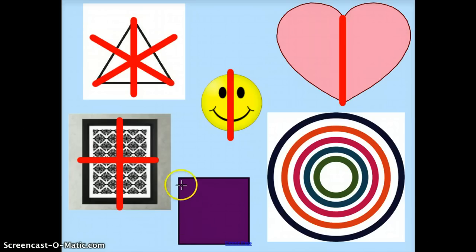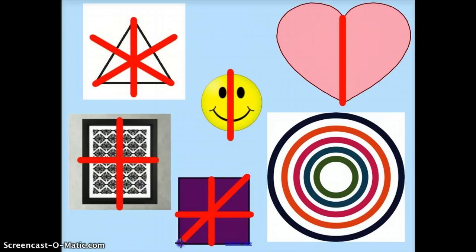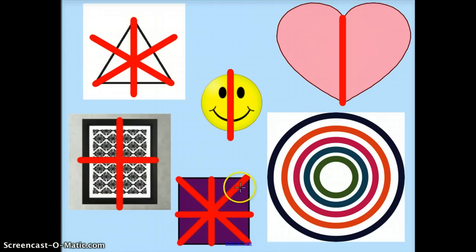Now the square is different than the rectangle. I see a vertical line, a horizontal line, but what if I go diagonal on a square? Is that a line of symmetry? And the answer is yes. So a square has a vertical, horizontal, and two diagonals — four lines of symmetry.